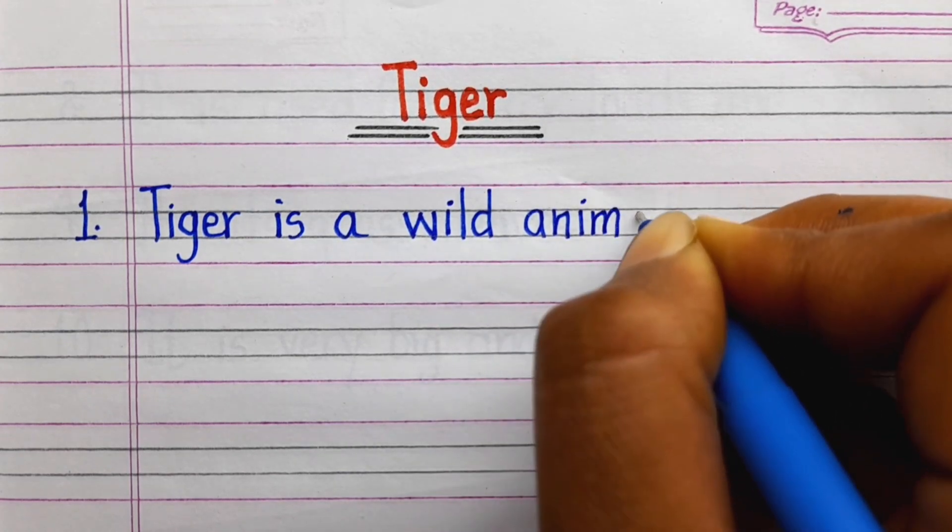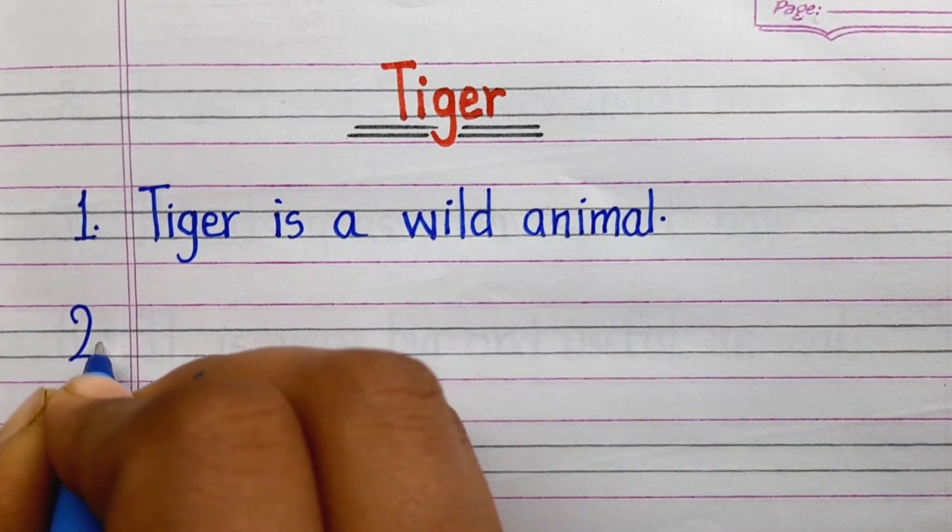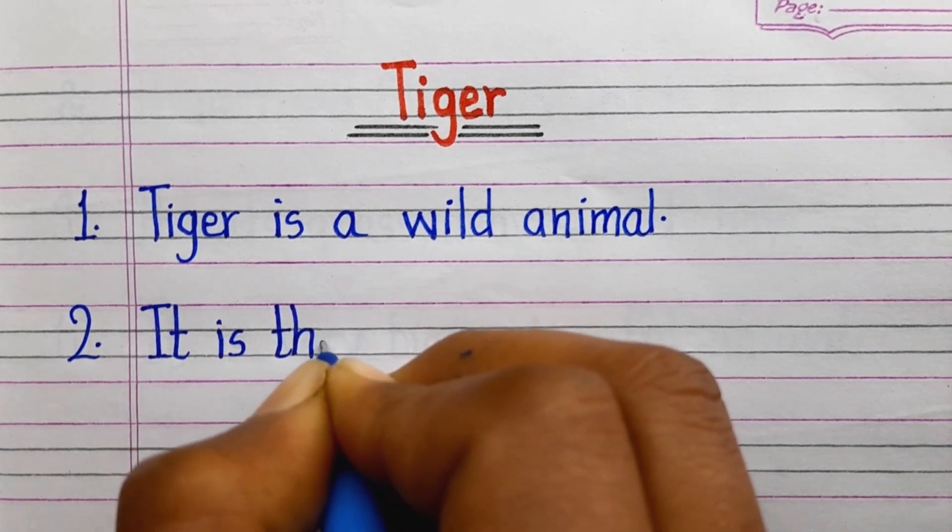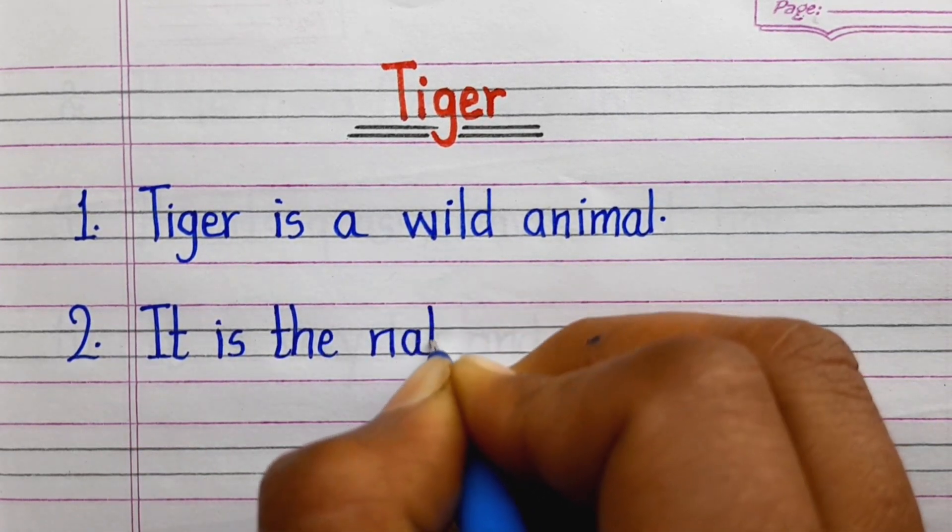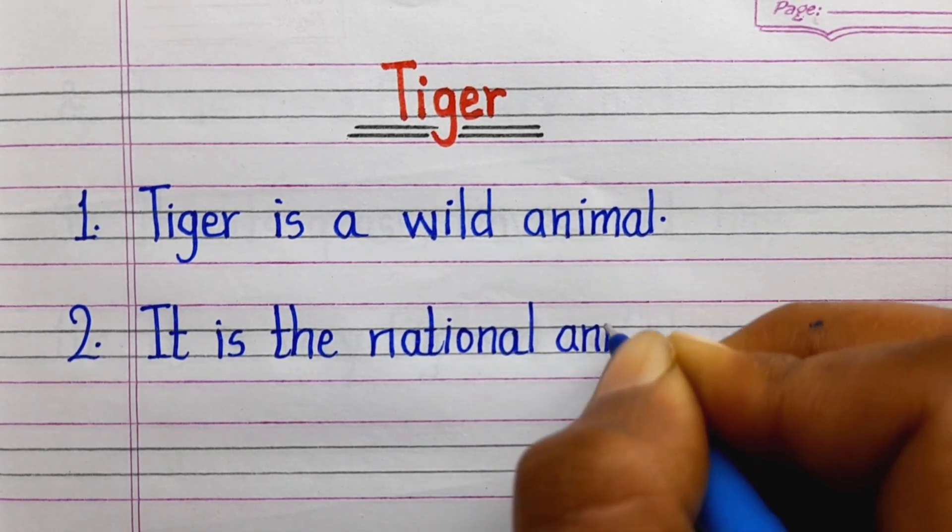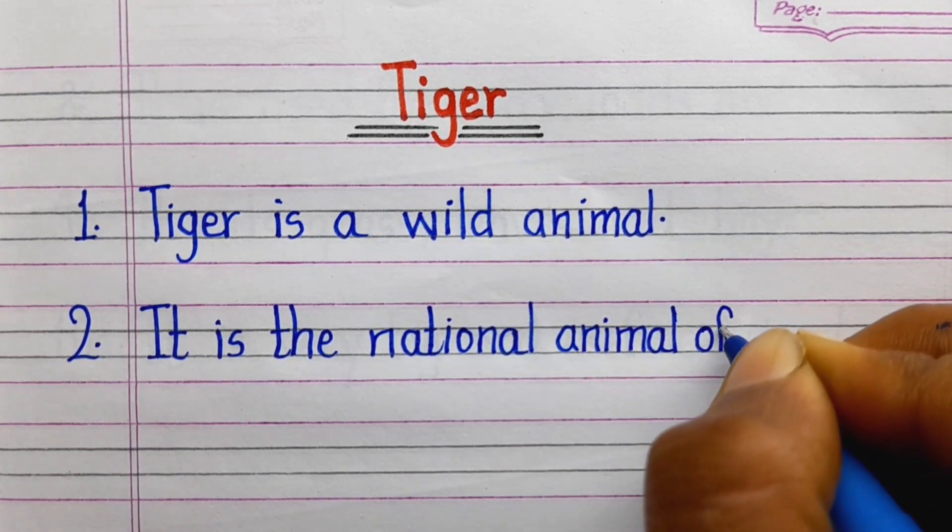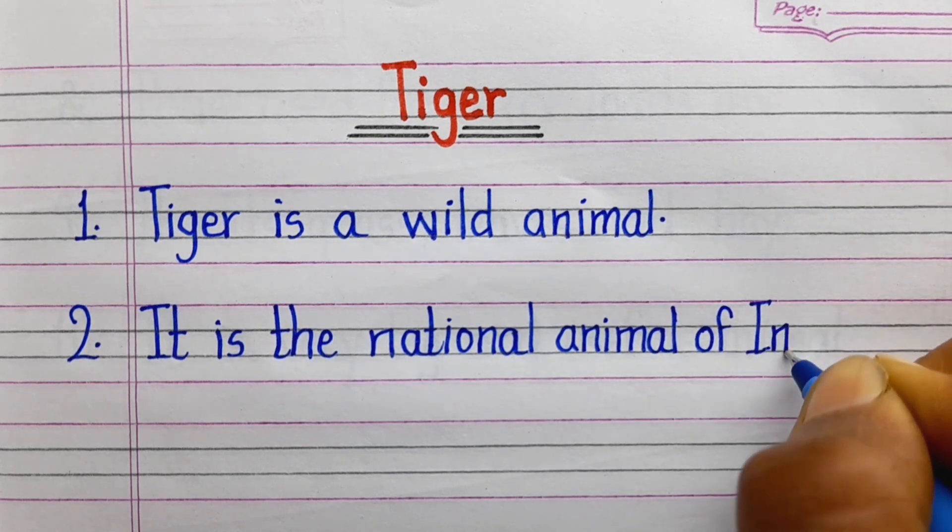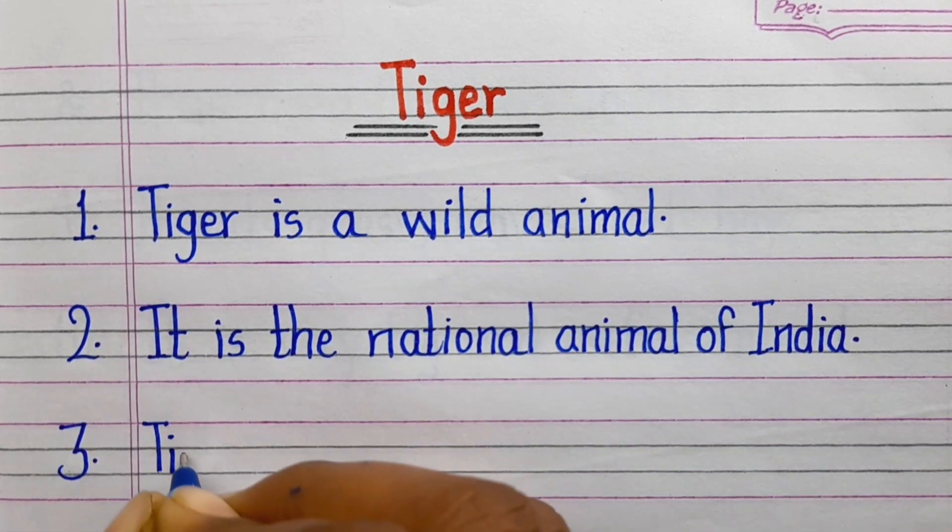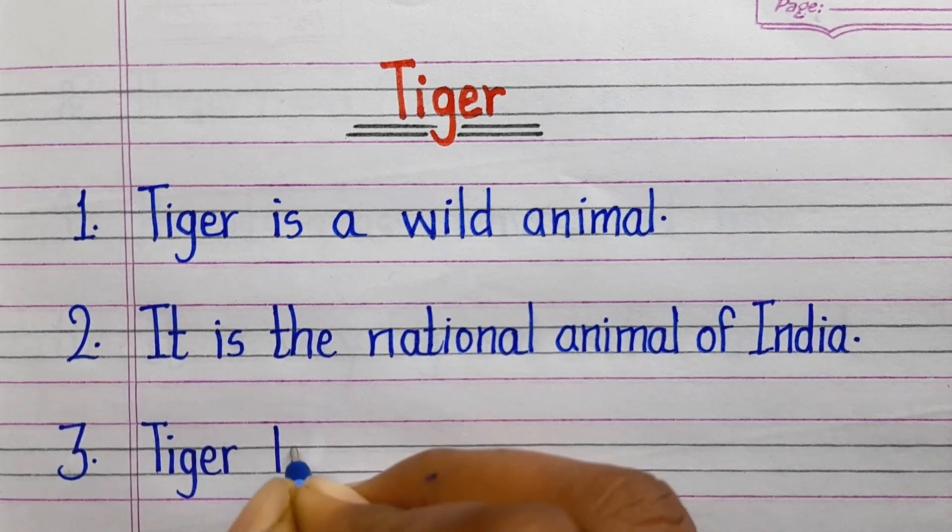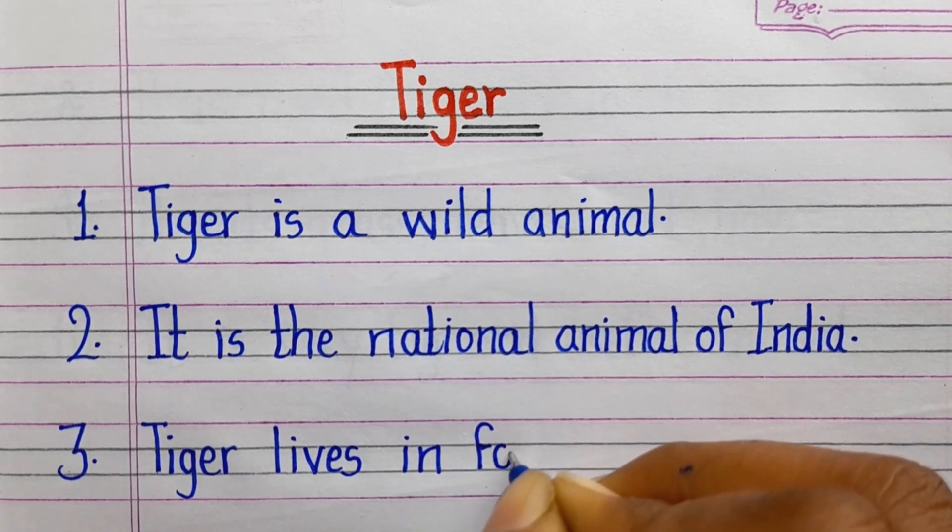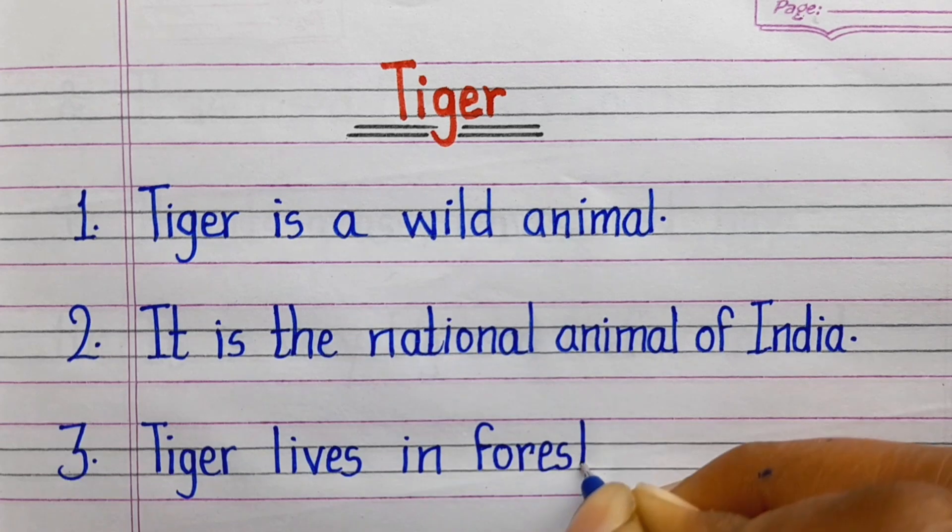First line: Tiger is a wild animal. Second line: It is the national animal of India. Third line: Tiger lives in forest.